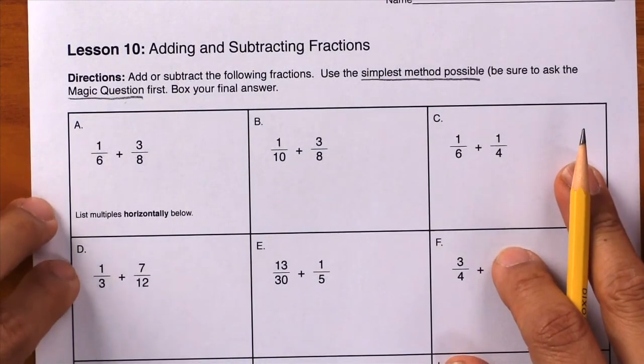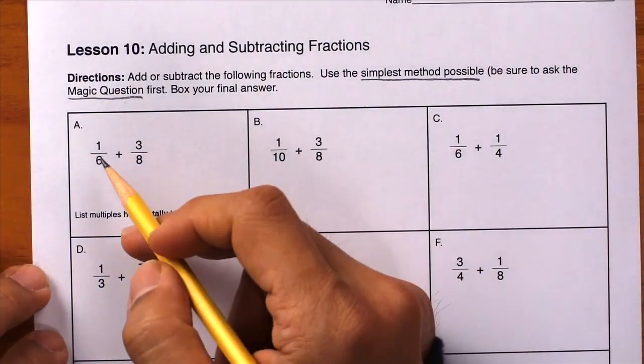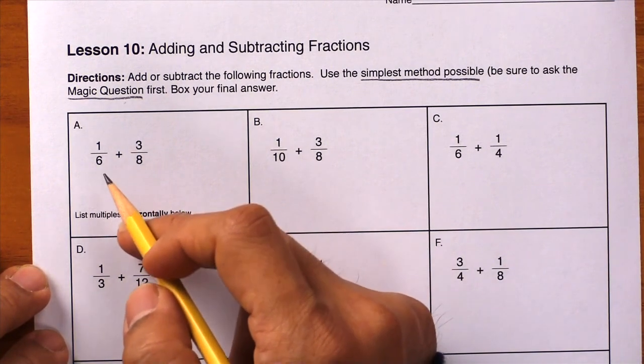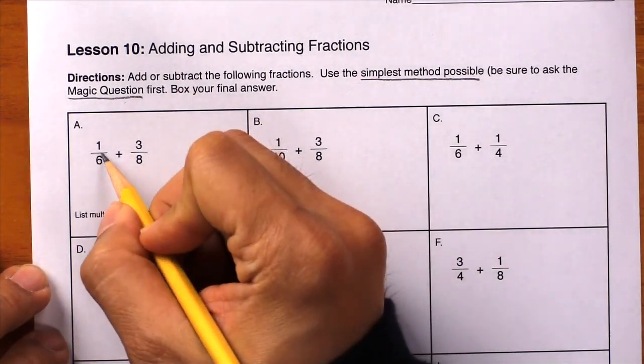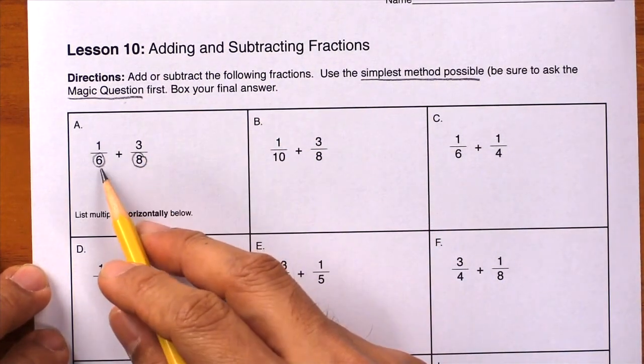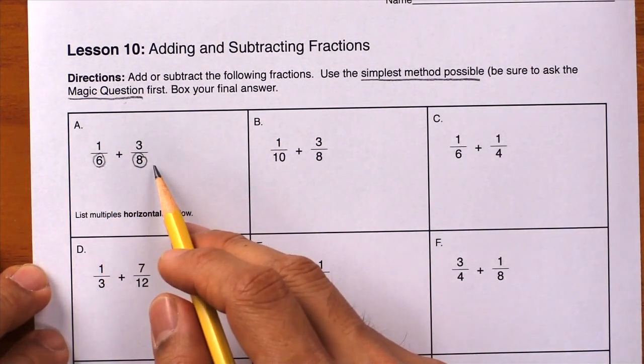Here's Box A. We have the fractions one-sixth and three-eighths, and we can't add them together because they do not have the same denominators, which means they do not have the same name. Sixths and eighths are not the same thing.